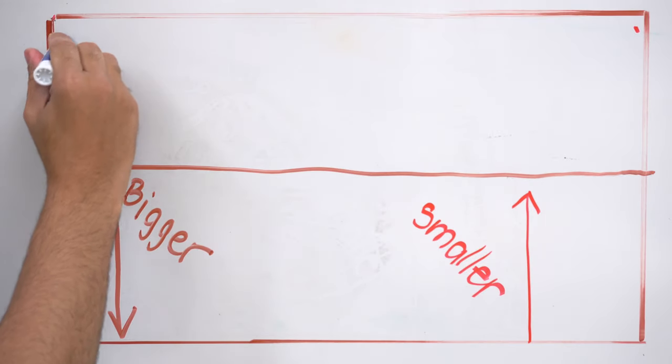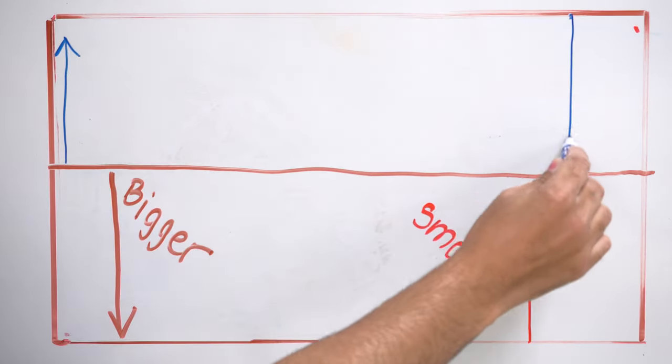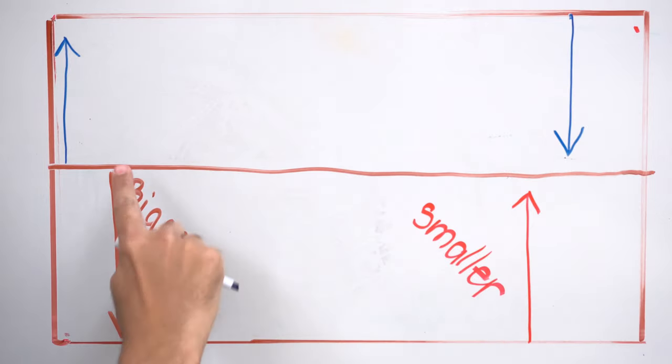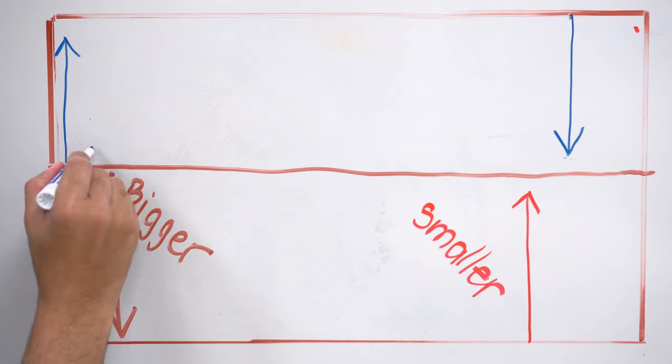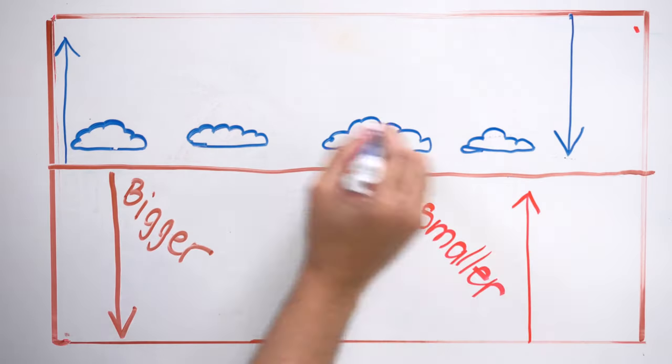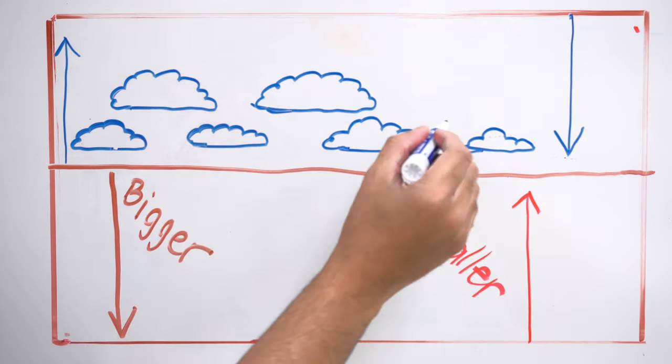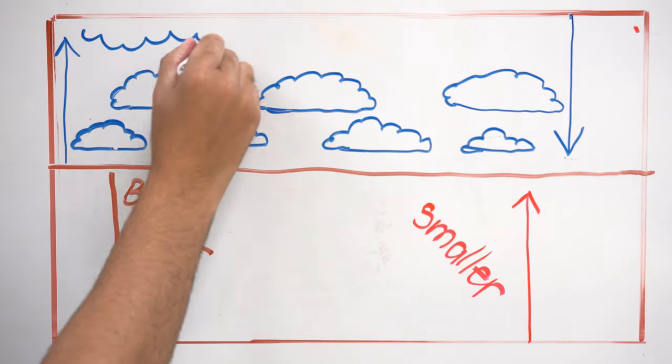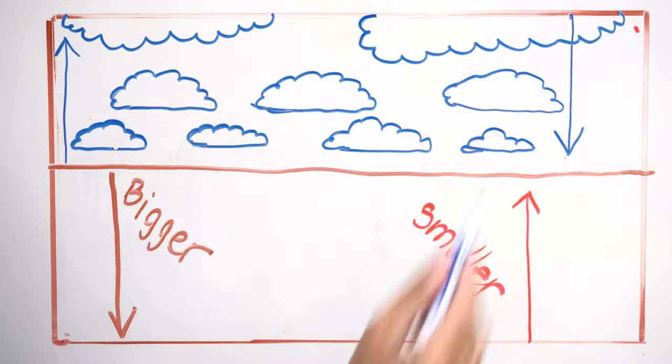Same thing for the sky. Things that move away from the horizon line get bigger and things near the horizon line get smaller. Things by the horizon line are actually far away so they look smaller, and things away from the horizon line get bigger because they're closer to the viewer like these two clouds.